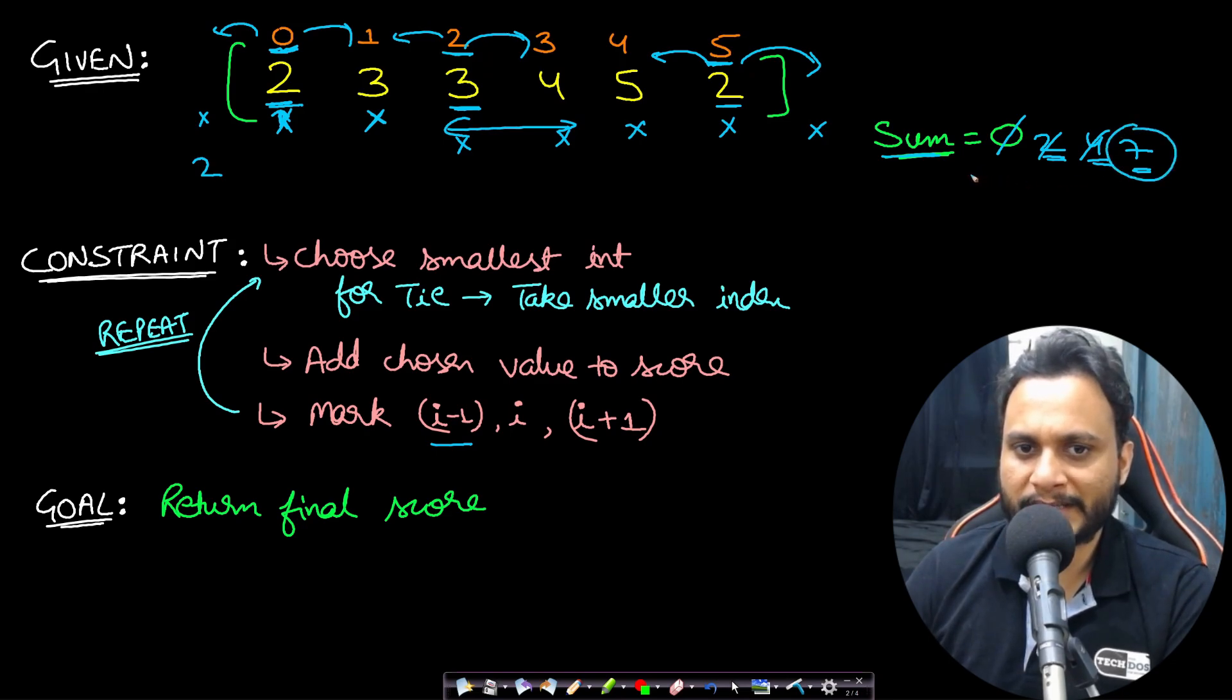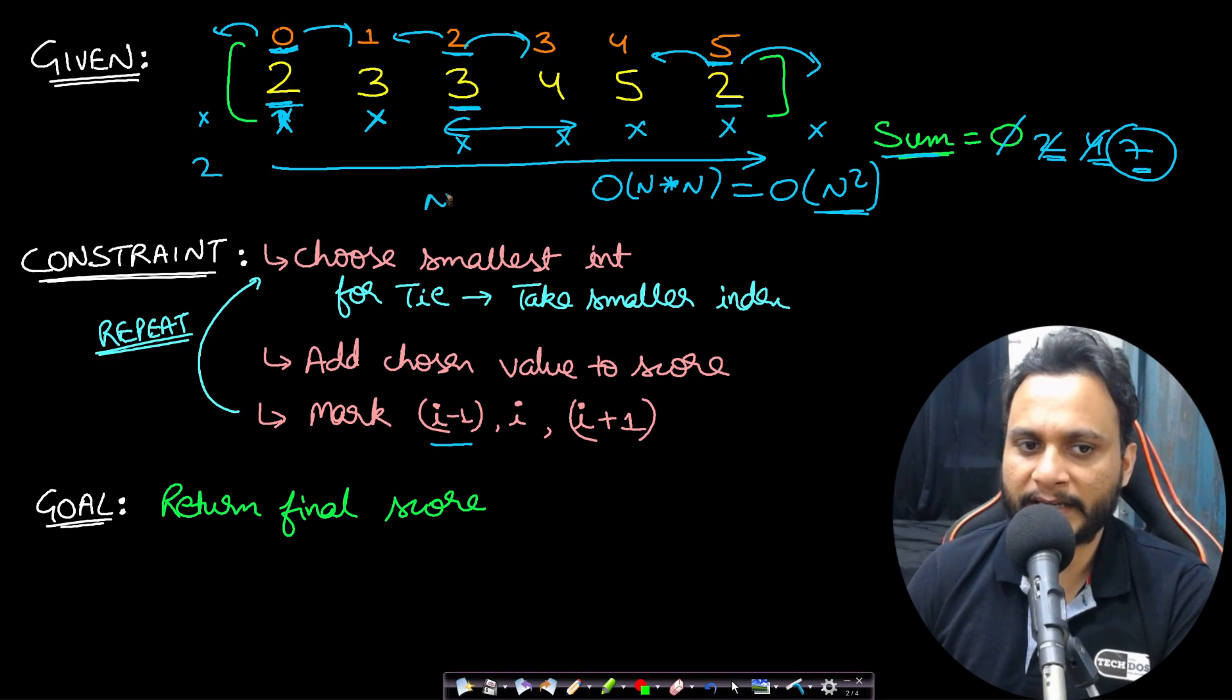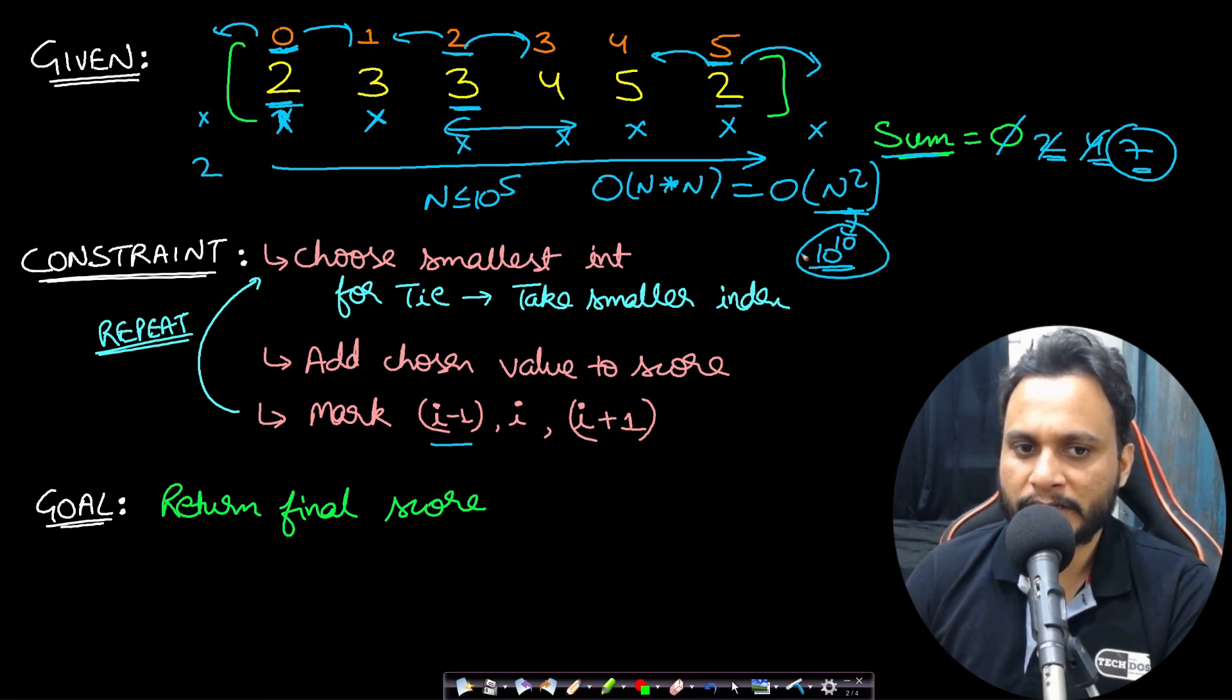So this problem is more about simulation. The algorithm is already given, we don't have to apply any brain. But then we have to do the simulation in the most optimal way. Now if you think about finding the minimum again and again from the unmarked items, then you may have to traverse the entire array for finding each minimum which is not marked. And that is why for finding the minimum, it will be order of n and if you are finding minimum n number of times, then the total complexity can range to order of n square. You already know that n is less than or equal to 10 to the power of 5. So if you write an n square algorithm which will become 10 to the power of 10 which is way beyond your 1 second. So this will give you TLE. So we should not do the brute force approach here.